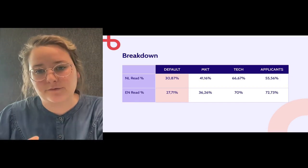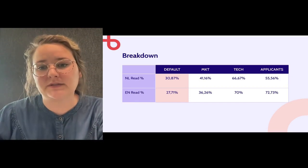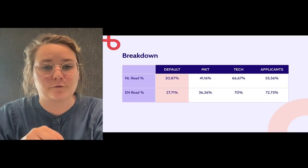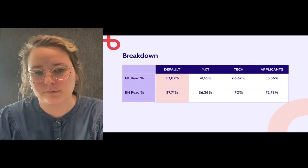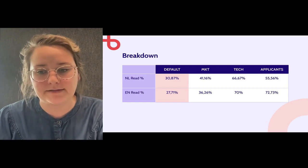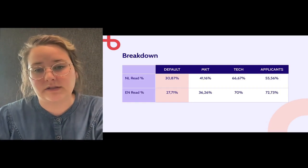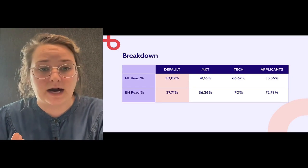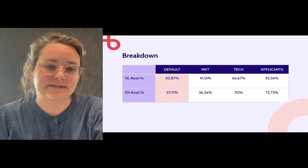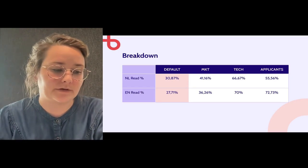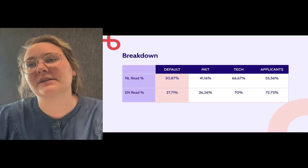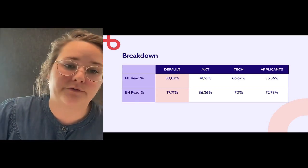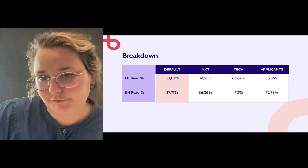This means that if you are put into one of the different segments instead of default, you will get more relevant and more personal content, and the open rate of the email is way higher. So the newsletter is opened more than when you have just a default version.